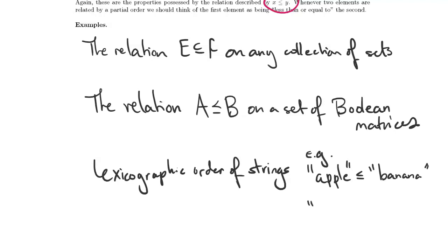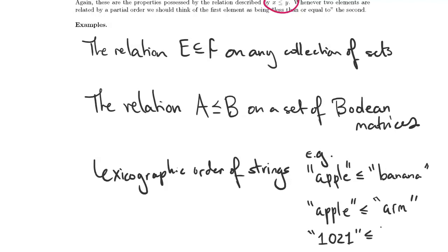We could also say that the word 'apple' is less than or equal to the word 'arm', because the first character is the same but then the second character is less than the second character of the other word. We could do the same thing with numeric strings — for example, the string '1021' is less than or equal to the string '1038'.